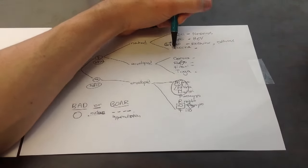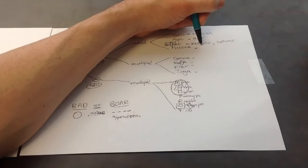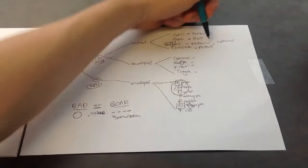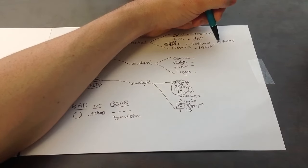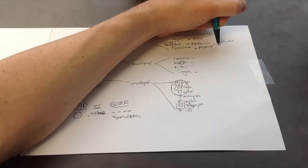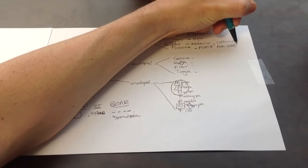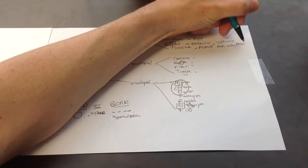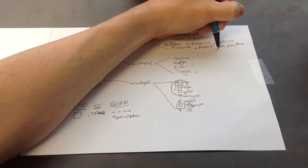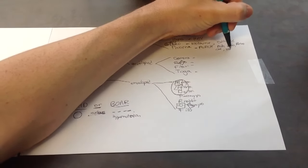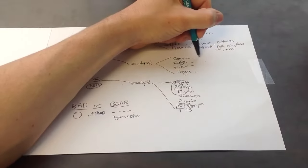Picorna. Remember this was chirp. Well, its mnemonic is perch. Just backwards of chirp. P-E-R-C-H. That stands for polio, echo, rhino, coxsackie, and H-A-V. So polio, echo, rhino, coxsackie, and then H-A-V.